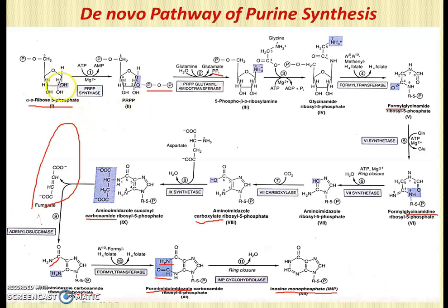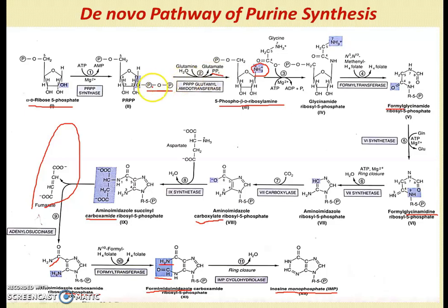PRPP is synthesized by phosphoribosyl pyrophosphate synthase; ATP donates two phosphates to the first carbon. In Step 1, PRPP is converted to 5-phospho-beta-D-ribosylamine. The amino group donor is glutamine, which is converted to glutamate. The pyrophosphate is released, and this drives the conversion from the alpha to the beta configuration using the released energy.